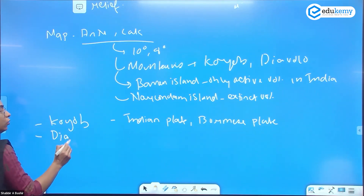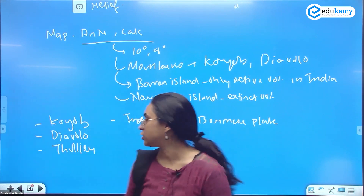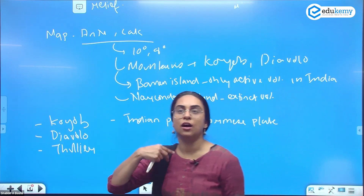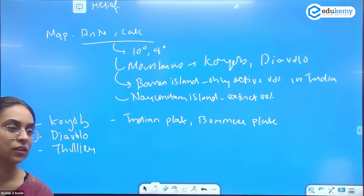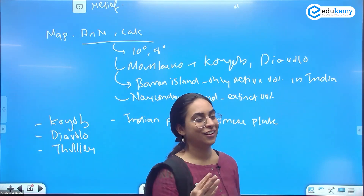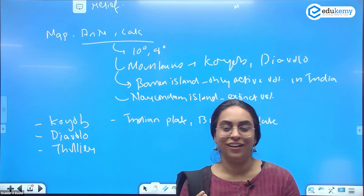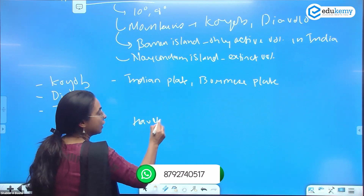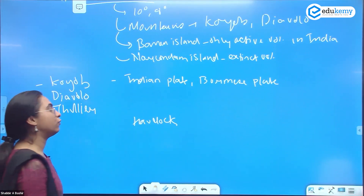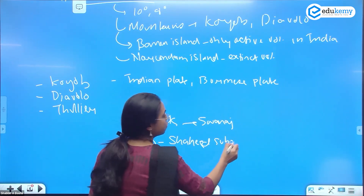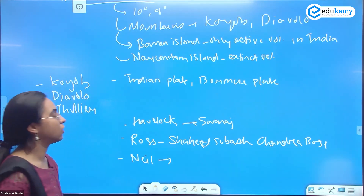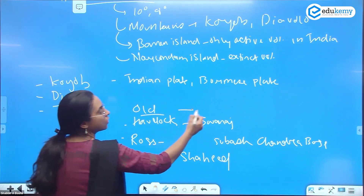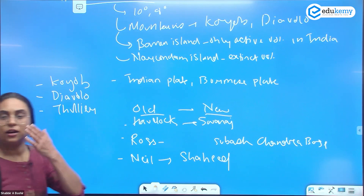Note the names of the islands that have been changed. Havelock Island has been renamed Swaraj Island; Ross Island has been renamed Subhash Chandra Bose Island; and Neil Island has been renamed Shaheed Island. These are new Bharatiya names. This kind of fact about renamed islands could be asked in the exam.